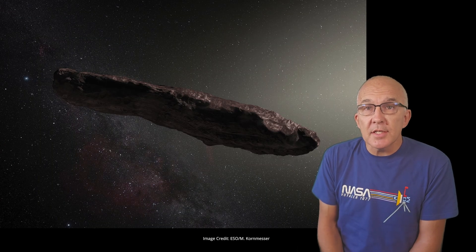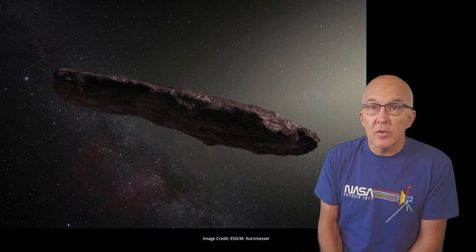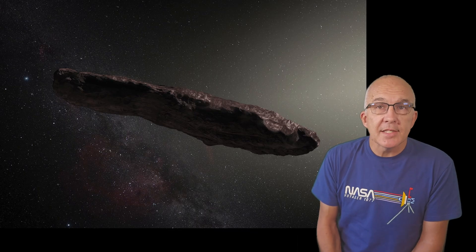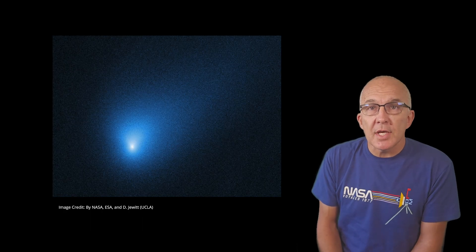Only two other interstellar objects have been discovered previously. Oumuamua was discovered in 2017 and has an eccentricity of around 1.2, and Borisov was discovered in 2019 with an eccentricity of roughly 3.3.